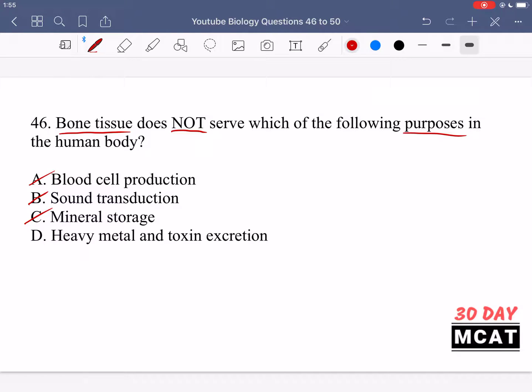And finally, heavy metal and toxin excretion is not a function of bone. Bone tissue may contain some heavy metals, but it's more so a storage purpose, but it does not actually excrete these metals. So any toxin excretion, that's a function for other parts of the body, for example, the kidneys, but not bone tissue. And even if the bone contains heavy metals, it's not responsible for excreting them. So D is the correct answer here.